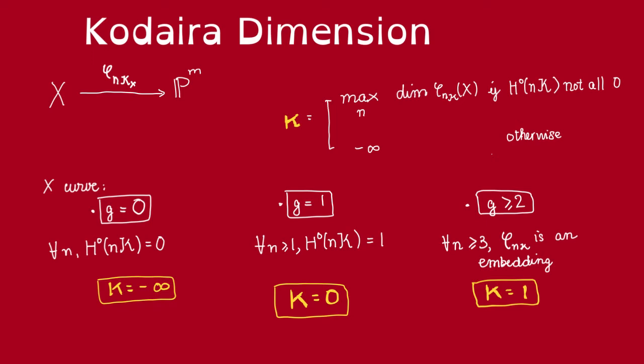Finally, if X has genus greater than or equal to 2, then for n greater than or equal to 3, we actually get a canonical embedding. So, that means for n sufficiently large, the images of these are just going to be isomorphic to X. So, they are of dimension 1. Because X is a curve, so the Kodaira dimension being the maximum of this dimension must be 1.